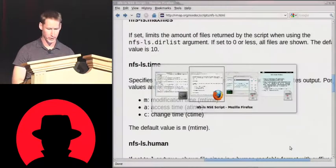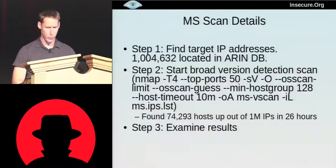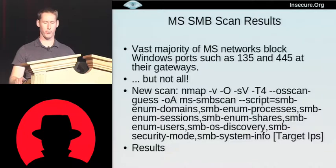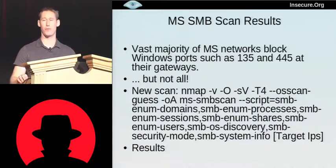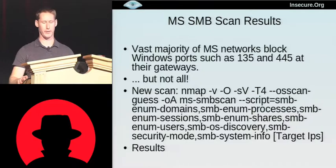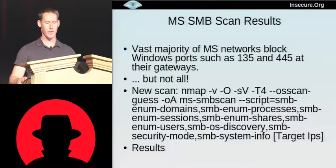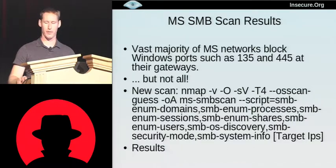The SMB results showed that the vast majority of Microsoft's networks completely blocked the Windows ports — such as 135 and 445. This is something other enterprises should take note of: if Microsoft feels it's unsecurable and should be blocked, you probably would want to as well. However, not all of their networks blocked them — there were dozens of machines that had port 445 open.